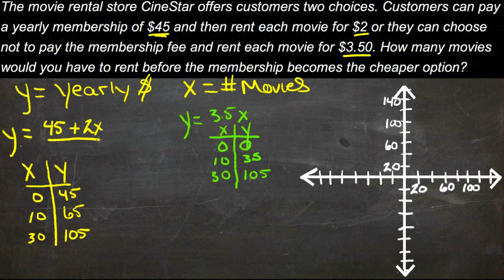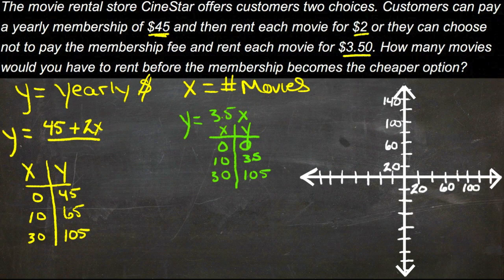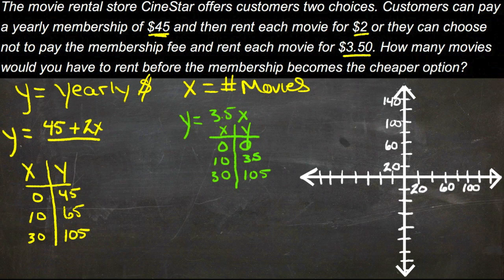Our first equation is y equals 45 plus 2x, because it's the $45 yearly fee plus two times the number of movies, since each movie costs $2.